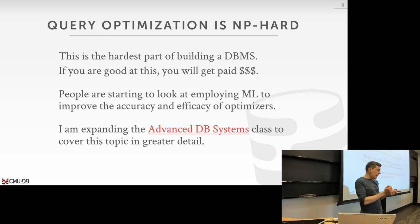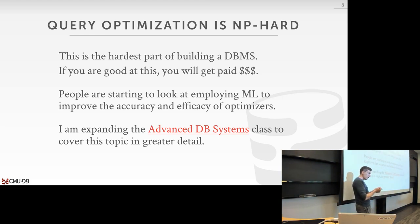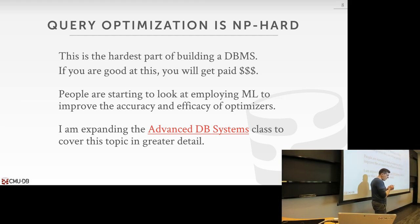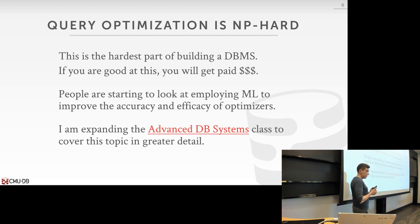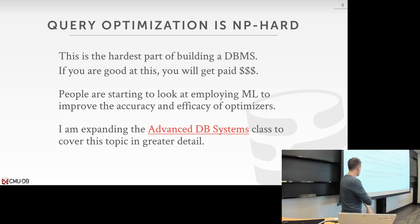This is what separates the high-end guys — Oracle, SQL Server, IBM, Teradata — versus the open-source or smaller systems. The enterprise systems have been around a long time, spent millions of dollars, and hired hundreds of people to work on these optimizers. They're quite sophisticated, and if you can do this kind of stuff, you'll be in demand.